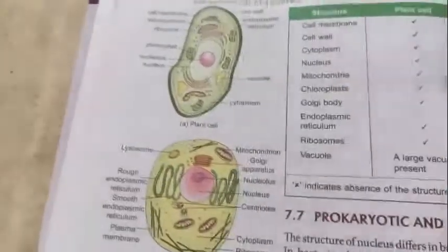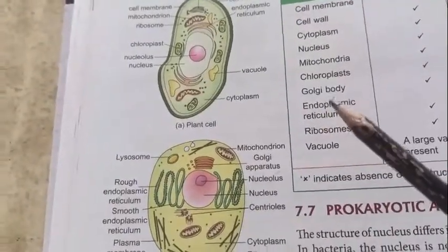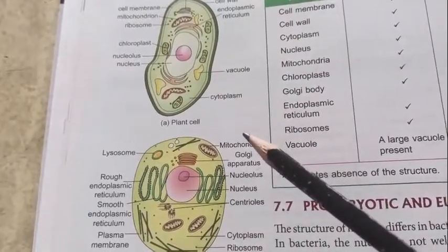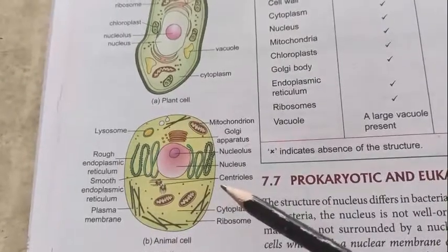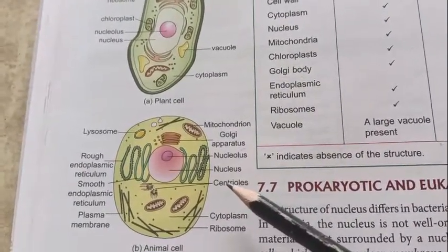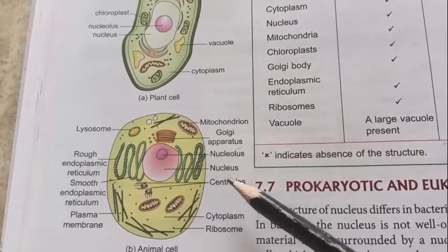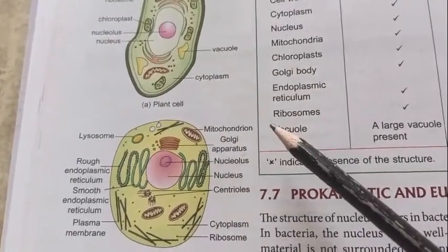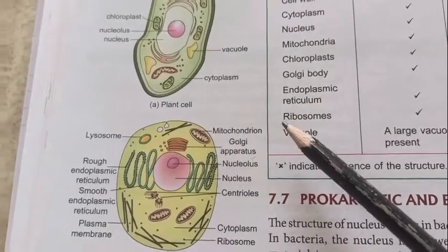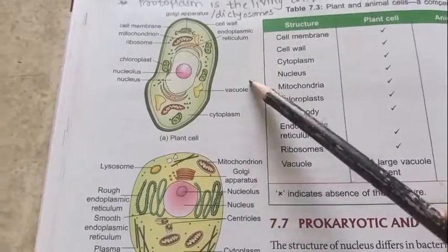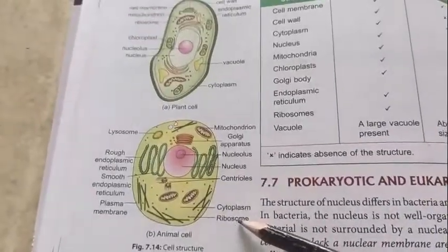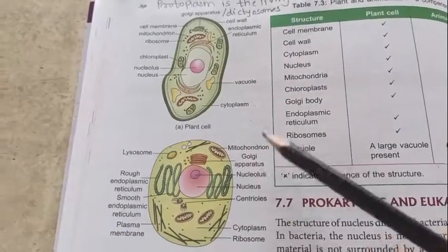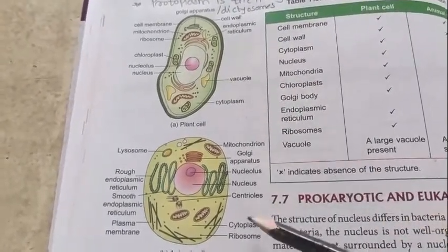Now, as we have discussed the cell, there are some basic structures and functions that are the same in both the plant cell and the animal cell, but there are also certain differences between them. In today's session we are going to discuss the differences between plant cell and animal cell. I have the image of the plant cell and the image of the animal cell, and we will compare both images one by one.